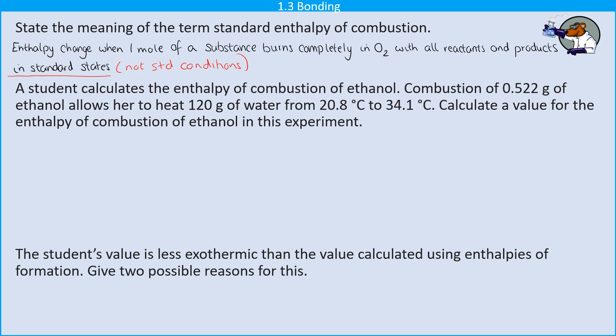Then for the second part of this question, we have a really standard calorimetry calculation. So the first thing that we're going to want to do is to write down the equation Q equals MC delta T. And that on its own is often worth a mark, which is quite generous and unusual for AQA.